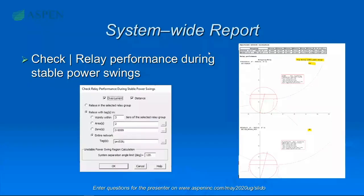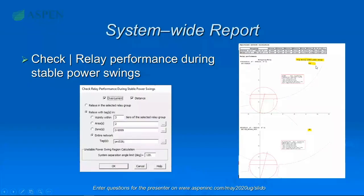What is the fault locator? We utilize recorded fault event files from the relay to find the fault location in one-liner. We have two scenarios: first, we only have one event file; second, we have two event files from two different relays and the fault location is between the two relays. We prepared two sample cases to demonstrate these two scenarios. For the single event file, first click the relay group where the event file was recorded, then right-click and select Fault Locator, or go to Fault > Fault Locator.